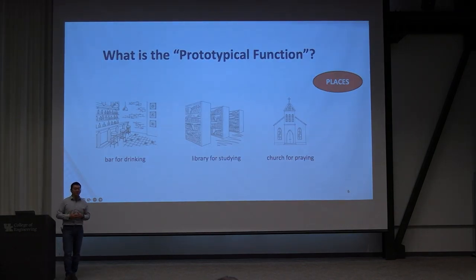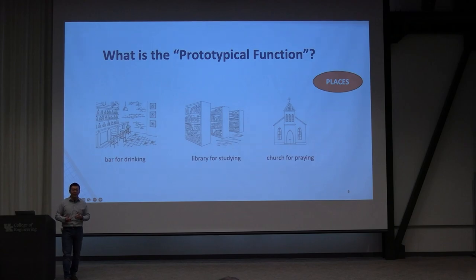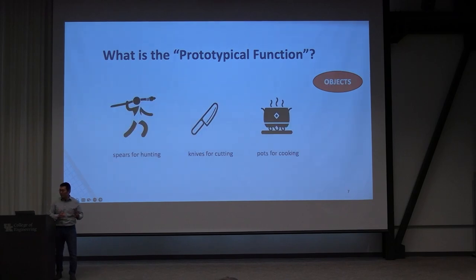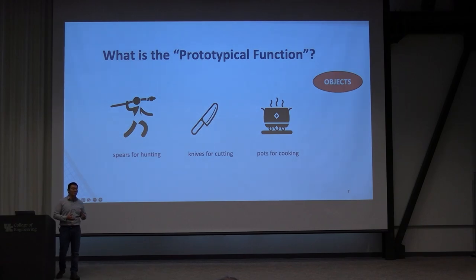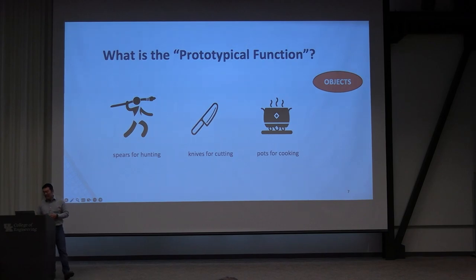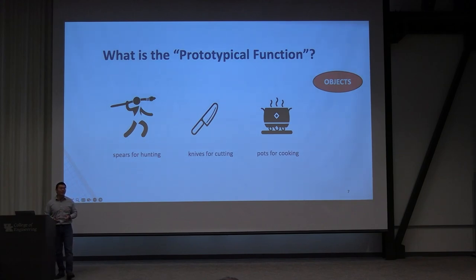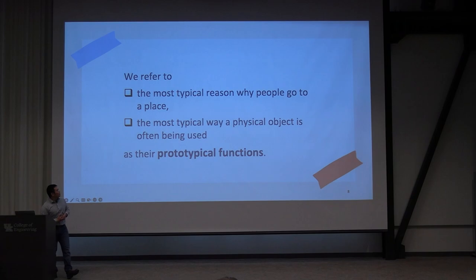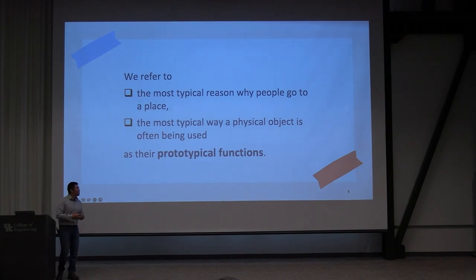Everyday people go to different places to accomplish goals. People go to bars to drink, libraries to study, churches to pray. Many locations are associated with one typical reason why people come there. It's also true for physical objects. Ancient people created spears for hunting, knives made from stones to cut meat, and containers like pots to cook food. Humans are a very creative species and new objects are being invented every day. We refer to the most typical reason why people go to a place, or the most typical way a physical object is used, as their prototypical functions.